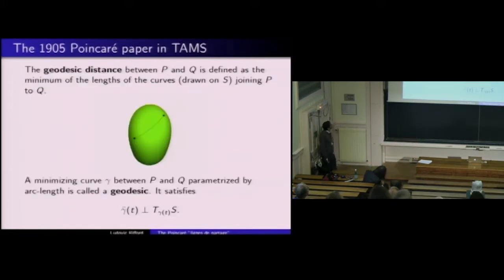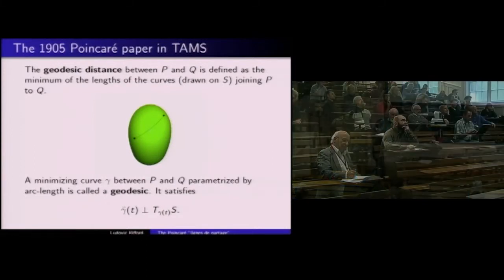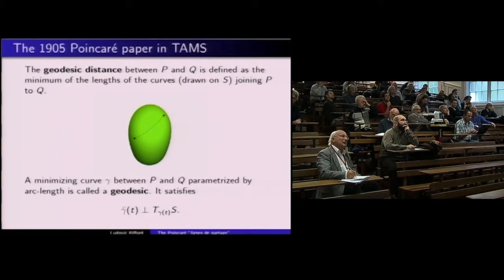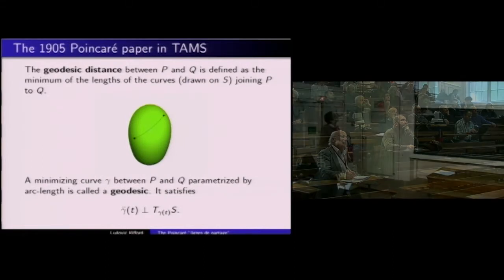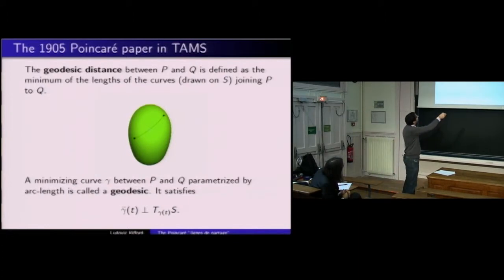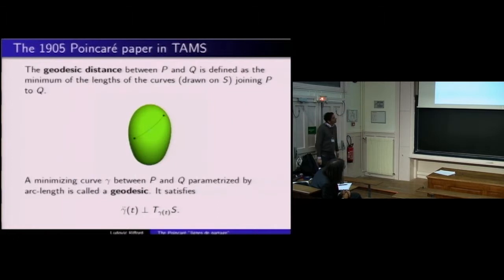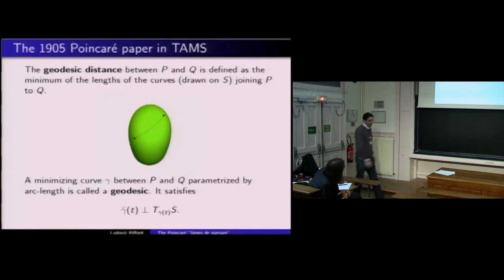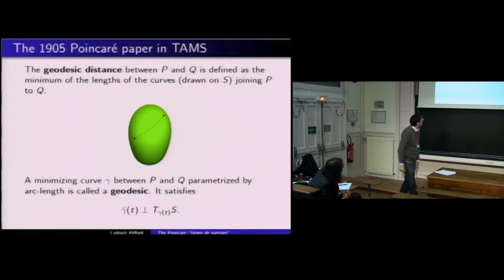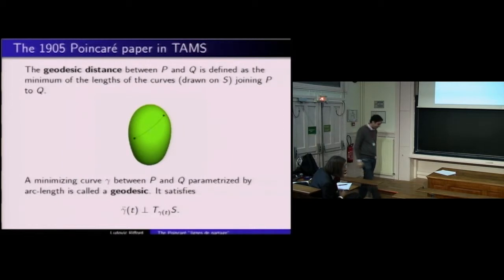Lorsque vous avez cette surface vivant dans l'espace ambiant R³, si vous vous donnez deux points vous pouvez définir la distance géodésique entre deux points P et Q : c'est l'infimum des longueurs des courbes que vous pouvez tracer sur S pour aller de P à Q. Cette distance est atteinte par le chemin le plus court, qui satisfait l'équation géodésique — la dérivée seconde est en tout point orthogonale à la surface. Ces courbes minimisent la distance et ont une vitesse de norme constante.